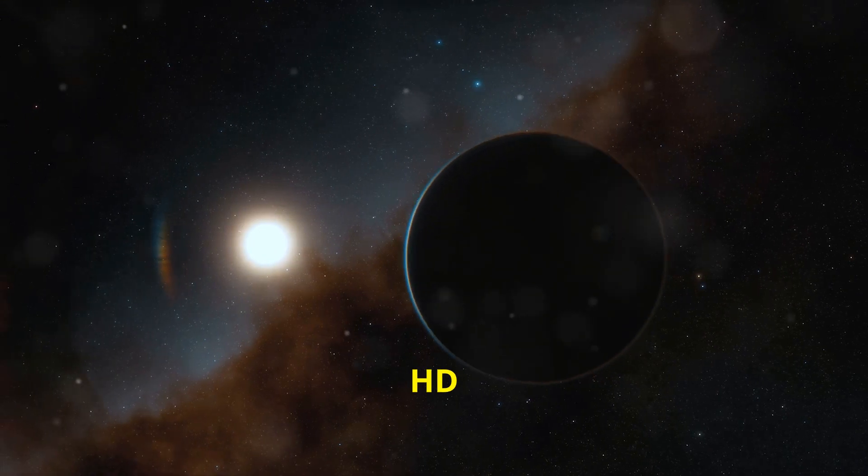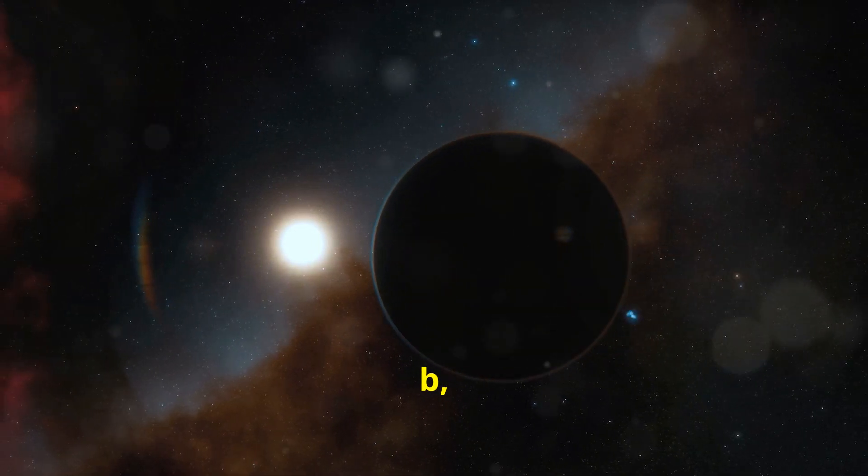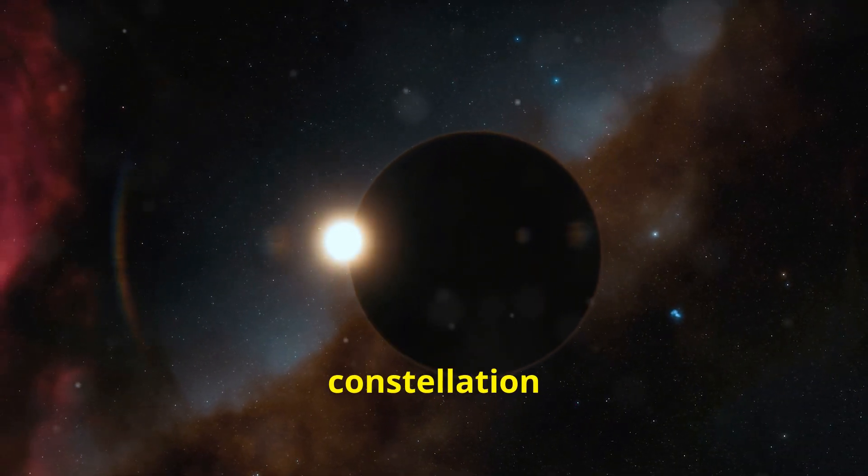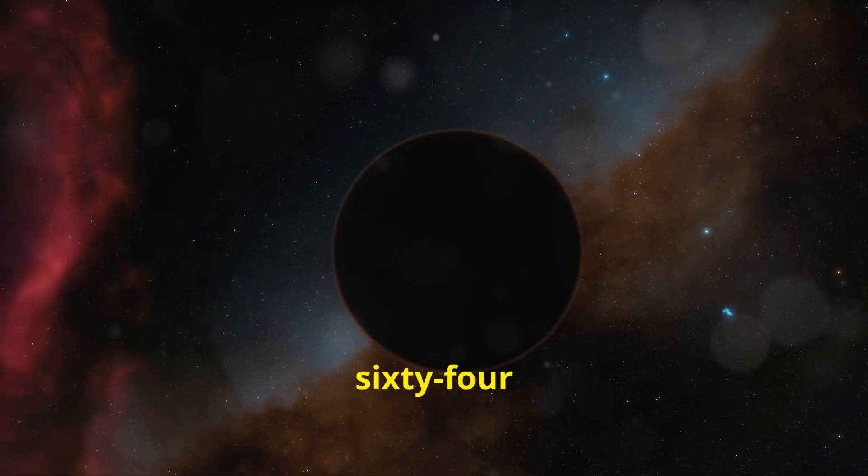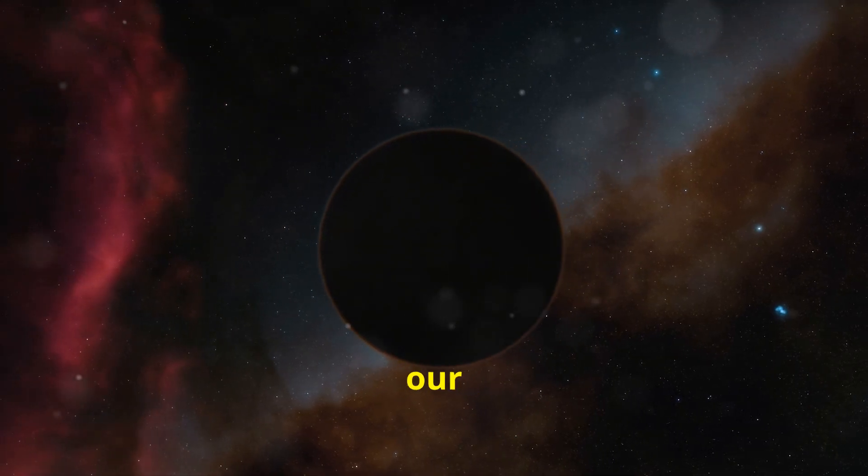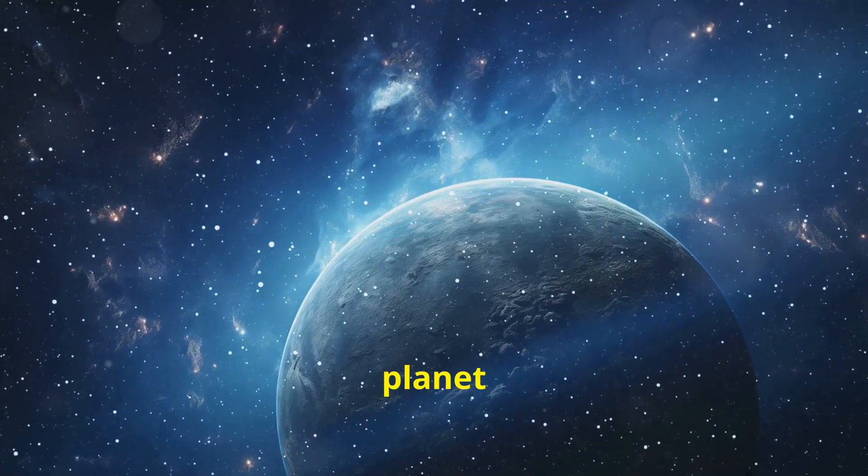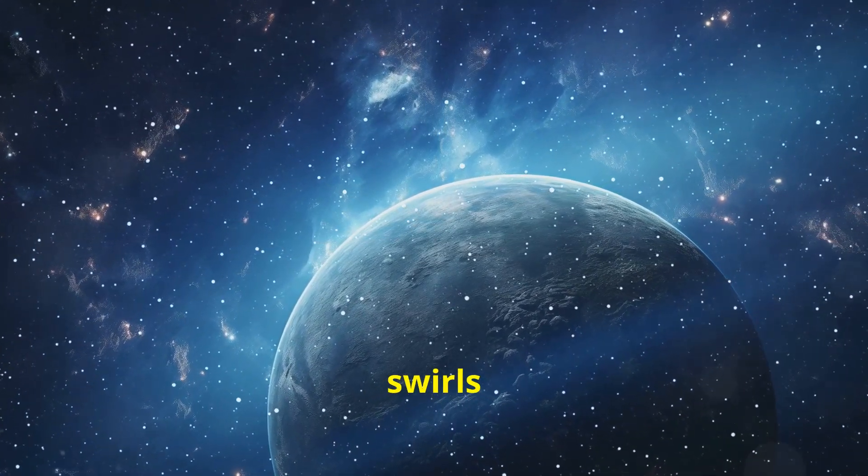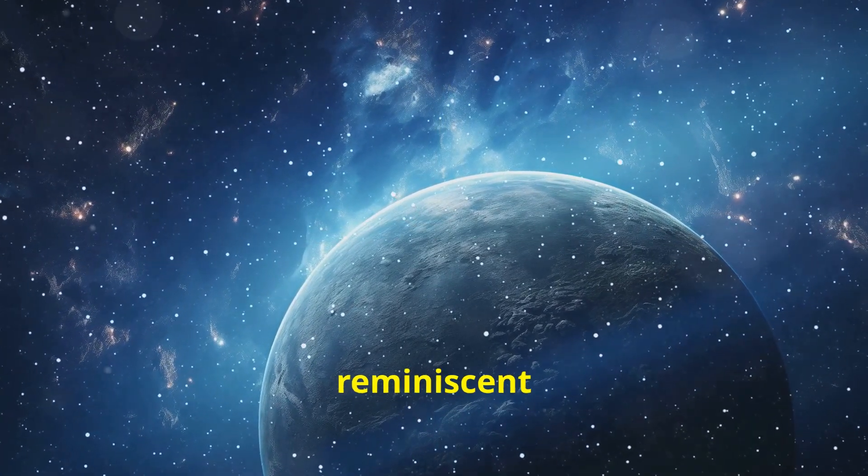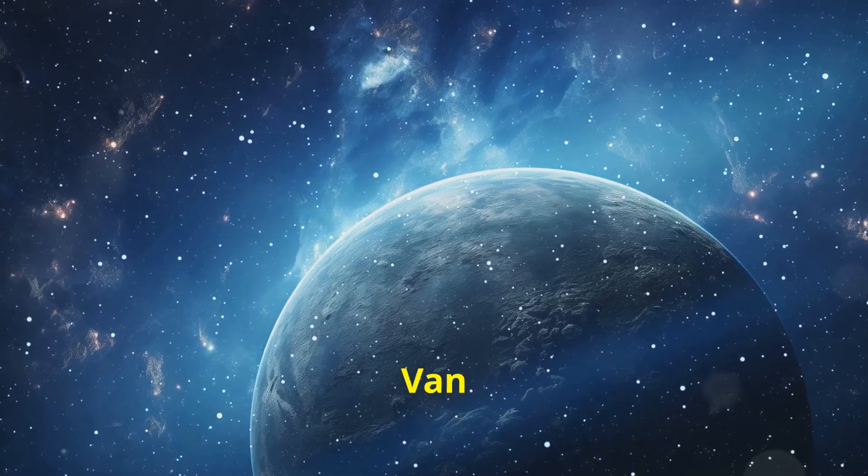Take the planet known as HD 189733 b, located in the constellation of Vulpecula, about 64 and a half light years away from our solar system. It appears to be a beautiful bright blue Earth-like planet with soft oceanic swirls forming marble-like patterns reminiscent of a refreshing work of Van Gogh.